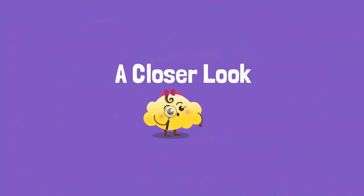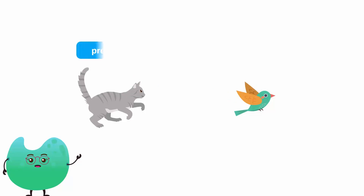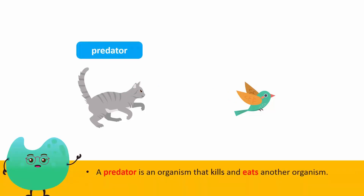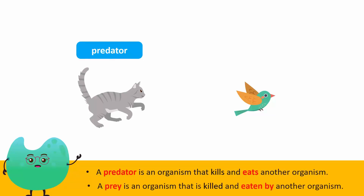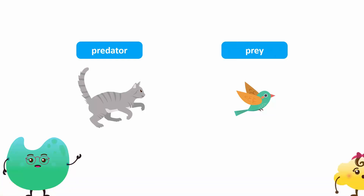Let's take a closer look at these relationships. For example, let's look at the cat and bird. In this process, the cat is a predator. A predator is an organism that kills and eats another organism. The bird was the organism that was killed, so it is the prey.